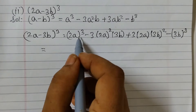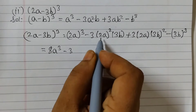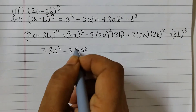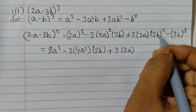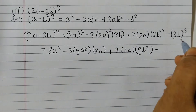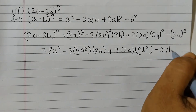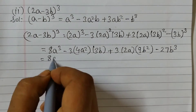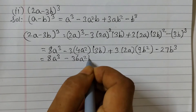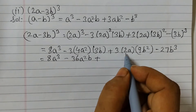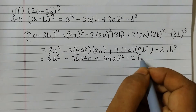Now we simplify. 2³ = 8, so 8a³. Then 3 × 4a² × 3b: 3 × 4 = 12, 12 × 3 = 36, giving 36a²b. Then 3 × 2a × 9b²: 3 × 2 = 6, 6 × 9 = 54, giving 54ab². And 3³ = 27, so 27b³. Result: 8a³ − 36a²b + 54ab² − 27b³.